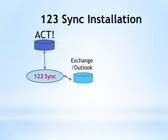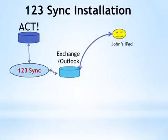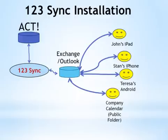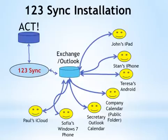In a regular Sync installation, you'll have ACT and then 123 Sync working with Outlook. That will sync, for example, to John's iPad or Stan's iPhone, Teresa's Android, a regular public calendar for the company, as well as the secretary calendar, and a Windows 7 phone. Paul likes to access his data through the web, so he has his data on the iCloud. This is how the world, as we see it — a heterogeneous environment with all these devices, all syncing with Exchange, and we just sync that data with ACT.